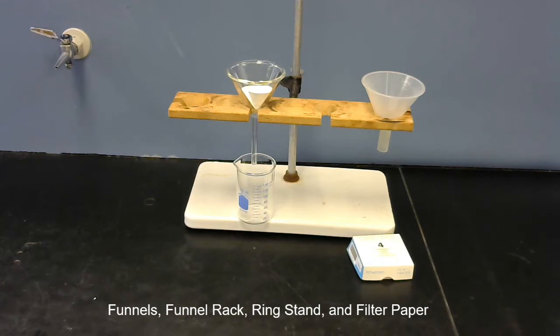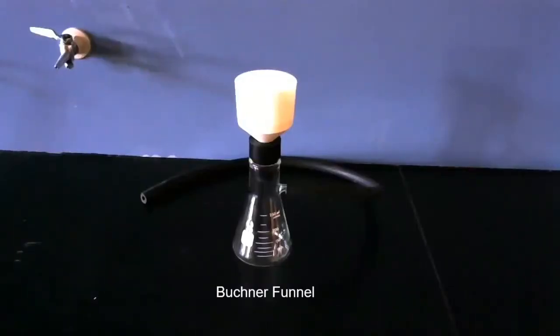This is a Buchner funnel, or some people just call it a filter funnel. You would put filter paper in the top and use that to separate a solid from a liquid, say a solid precipitate.